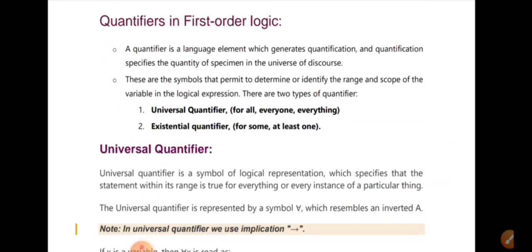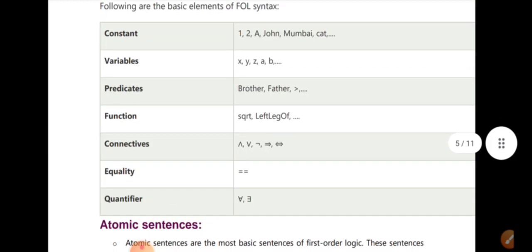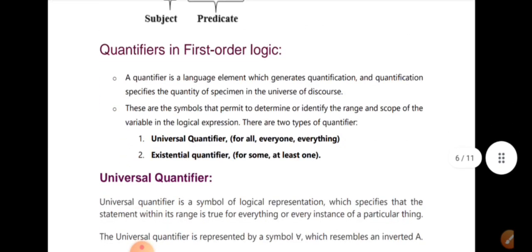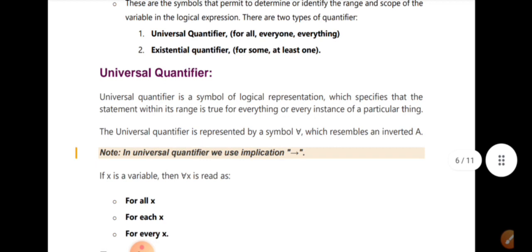Now let's talk about quantifiers. Quantifiers include 'For All' and 'There Exists'. These are called the Universal quantifier and the Existential quantifier respectively. The Universal quantifier means everyone, everything, whole, or for all. The symbol for the Universal quantifier is the inverted A. The Existential quantifier is used for existential statements.